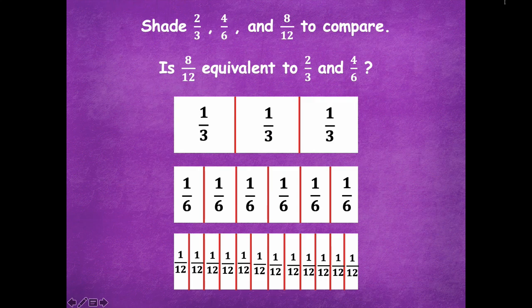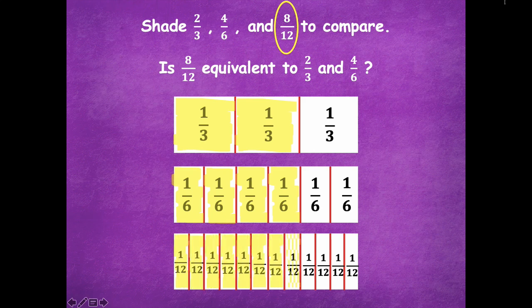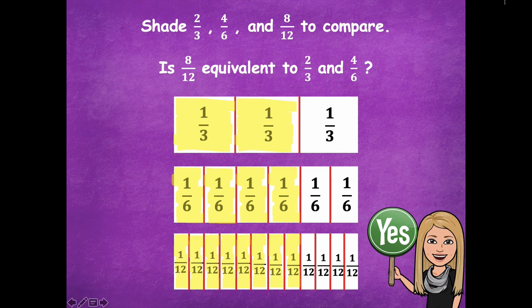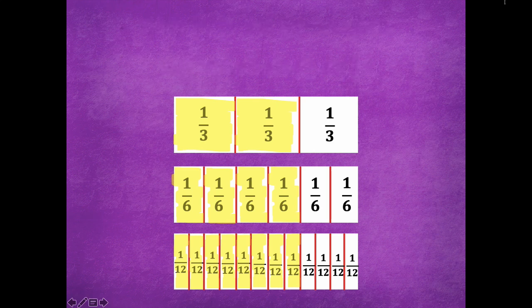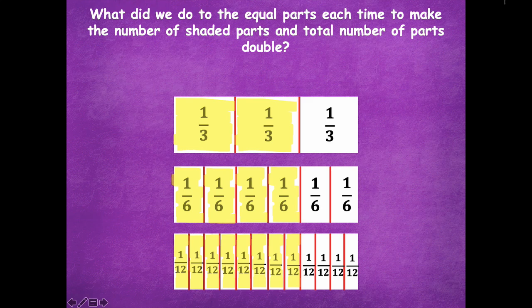Here's my two-thirds. My four-sixths would look like this. And then my eight-twelfths would be eight equal parts. Is eight-twelfths equivalent to two-thirds and four-sixths? Yes, it sure is — all three of them take up the same amount of space on the fraction strip. So what did we do to the equal parts each time to make the number of shaded parts and the total number of parts double?